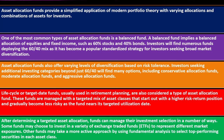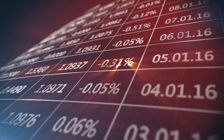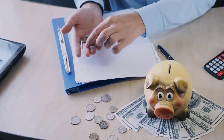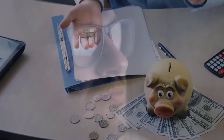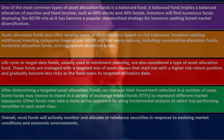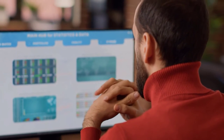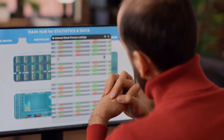After determining a targeted asset allocation, funds can manage investment selection in a number of ways. Some funds invest in a variety of ETFs to represent different market exposures. Others take a more active approach using fundamental financial analysis to select top-performing securities in each asset class. The more active management involved, the more costly it likely is. Using an indexed approach means less leeway for the manager but potentially lower costs.